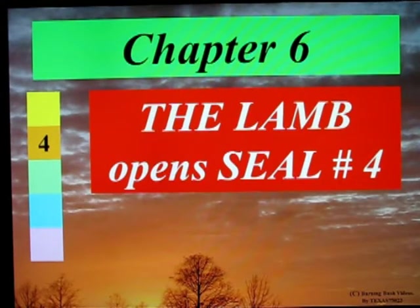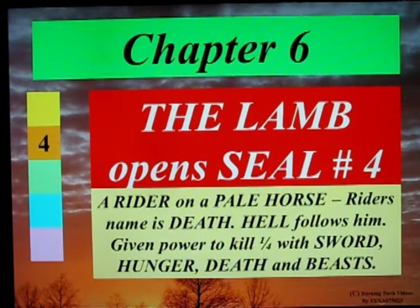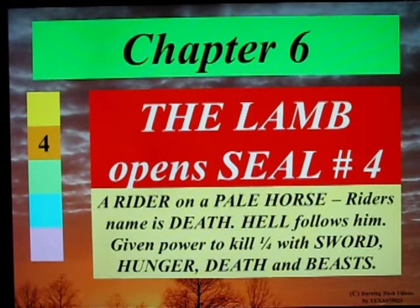The Lamb opens seal number 4 — a rider on a pale horse. The rider's name is Death and Hell follows him, given power to kill one quarter of people with sword, hunger, death, and beasts.